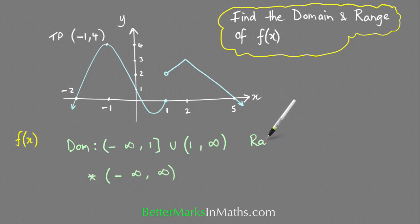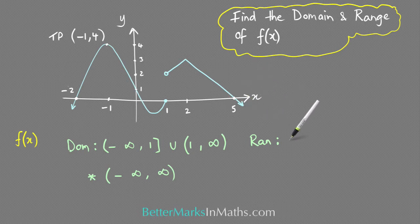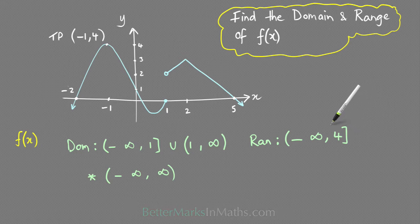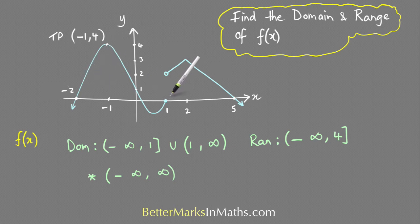For the range, looking at the lowest y value: this part heads off towards negative infinity, as does this end here, so the range starts at minus infinity. The highest y value on the graph is 4, and that's included because there's no open circle there. Even though there's a gap in the middle, the y values between 0 and 2 are included over on the other parts of the graph. So that's how you find the domain and range of hybrid functions, as shown in these two examples.